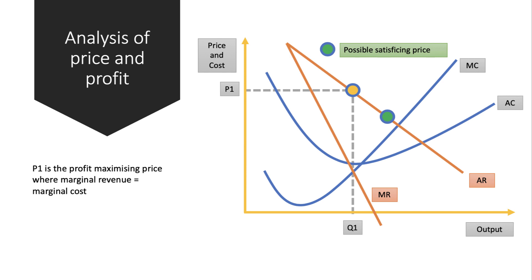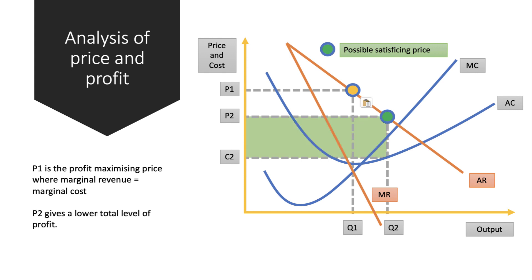The satisficing price is lower than P1. They're still making some profit. Output is going to be Q2 and the price is going to be P2. If we draw in the cost C2, you can see they're still making some profit. There's the green area showing profit, but not as much profit as at output Q1, price P1. Hopefully you can see that box is smaller than it was before.